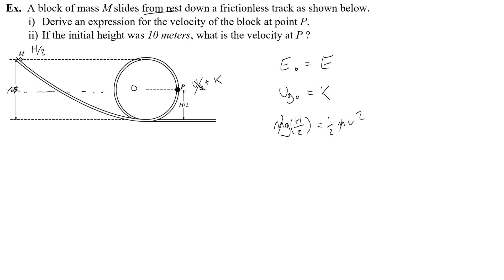So I'll get GH = V². So the velocity is the square root of GH. That's the expression for part 1.